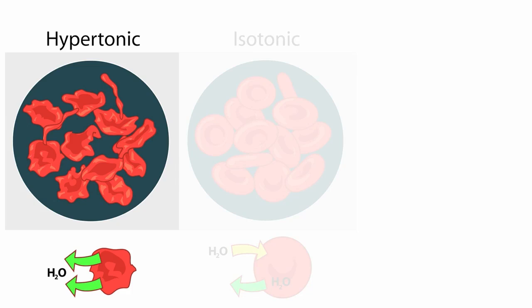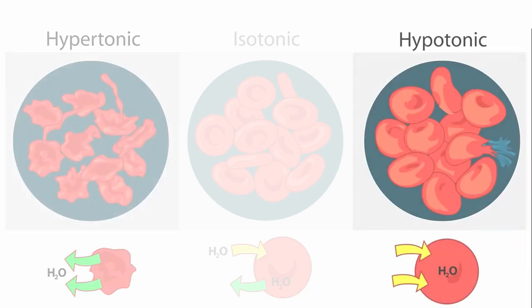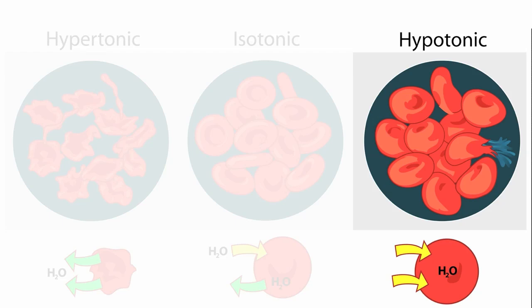However, if we bathe the red blood cells in a hypertonic solution — one where the osmolarity of the solution is higher than that inside red blood cells — osmosis causes the water to move from the area of lower concentration to higher concentration, that is, from the inside of the cell to the outside. As a result, the cells become deflated and shrivelled up. Conversely, if we place the red blood cells in a hypotonic solution, meaning the osmolarity outside the cell is lower than the inside, water moves from the lower to the higher concentration — that is, from the outside to the inside of the red blood cells — causing them to swell and even rupture.